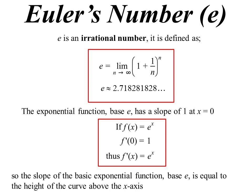What that basically means is, for an exponential function, where the base is e, the slope is going to be equal to the height of the curve, because the derivative is always equal to the y value.